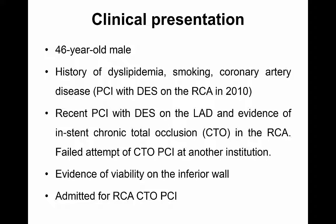This is a 46-year-old male with a history of dyslipidemia, smoking, and CAD. He had undergone a PCI with a drug-eluting stent on the RCA in 2010. Recently the patient presented again with new onset angina due to a lesion on the LAD that was stented with a drug-eluting stent, but the patient was also found to have in-stent chronic total occlusion in the RCA. This was attempted at another institution but failed, so the patient comes to us with evidence of viability of the inferior wall and is admitted for RCA CTO PCI.